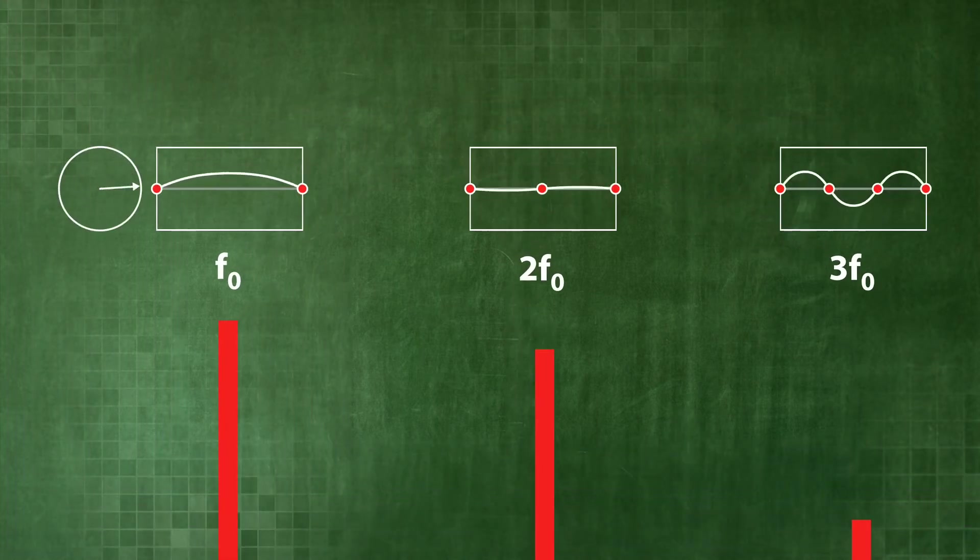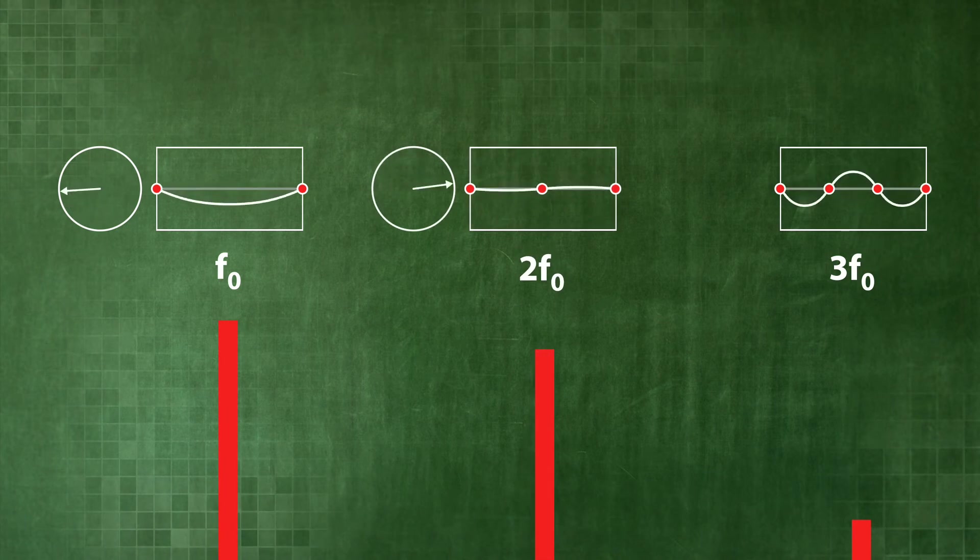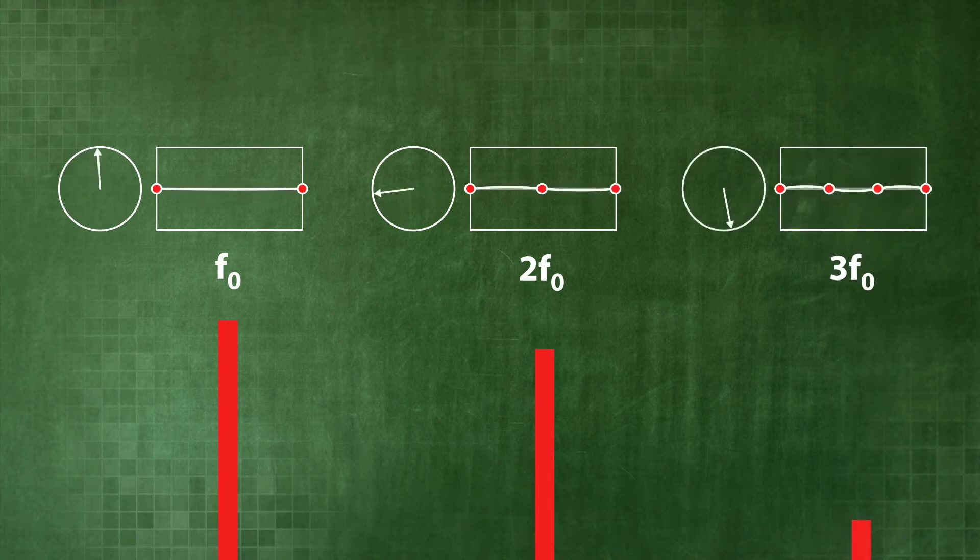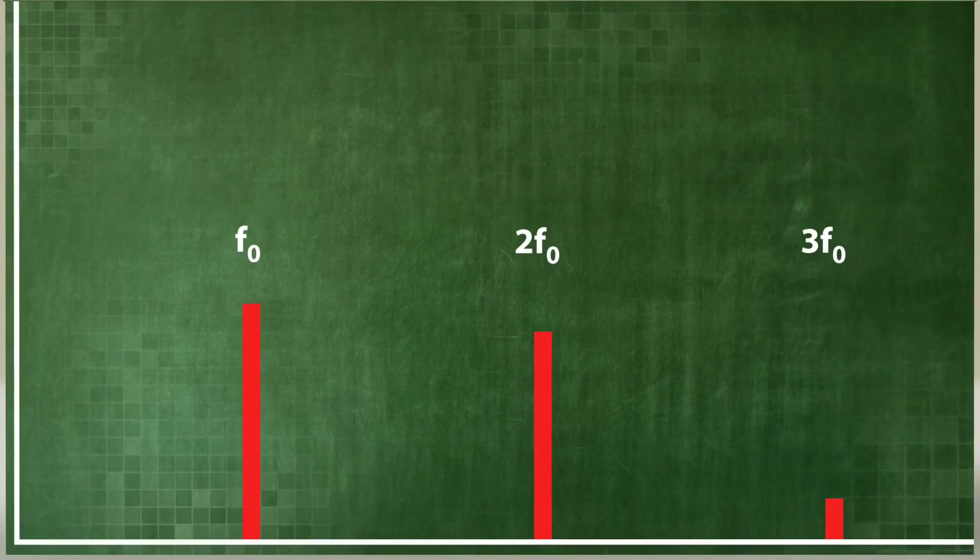Doubling the frequency halves the wavelength relative to the fundamental tone. Tripling the frequency reduces the wavelength to one third. It goes on like this for all the multiples of the frequency of the fundamental tone.